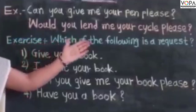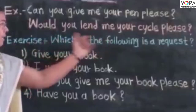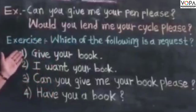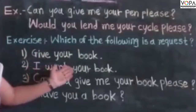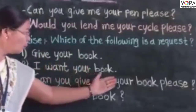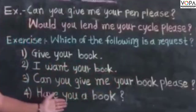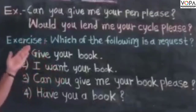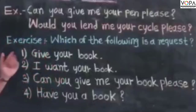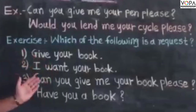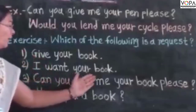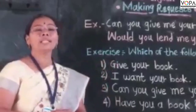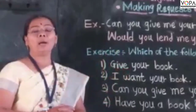Exercise: which of the following is the request? First, give me your book. Second, I want your book. Third, can you give me your book please. Fourth, have your book. The answer is: can you give me your book please.